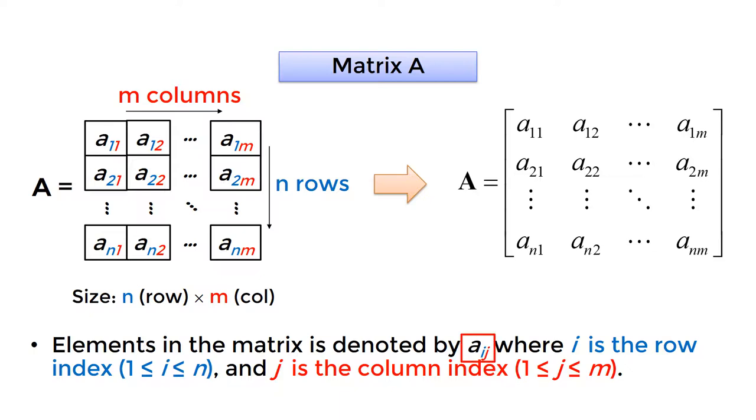The first subscript i represents the row number, and the second subscript j represents the column number. So a subscript 1, 2 means the element in the first row and the second column.